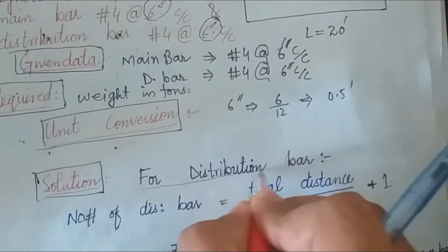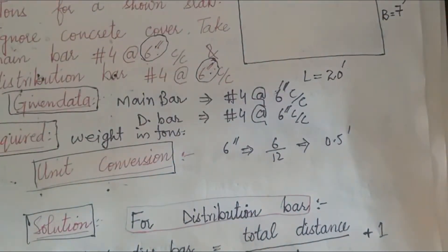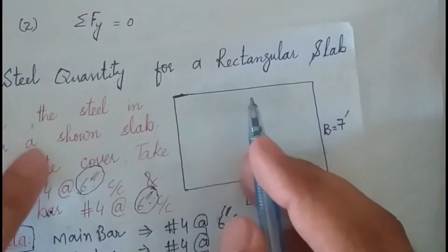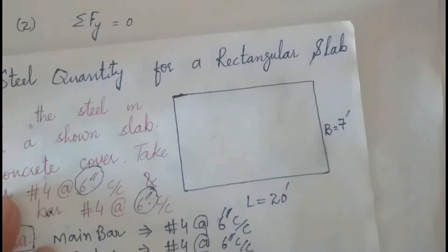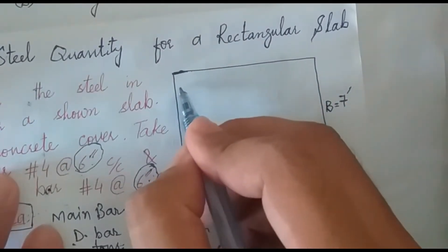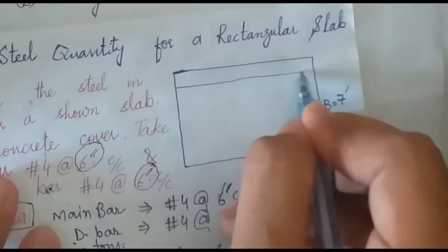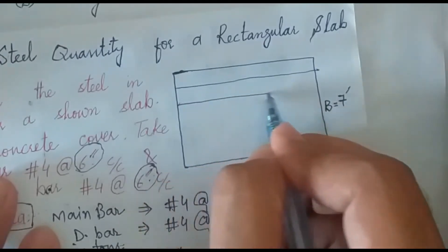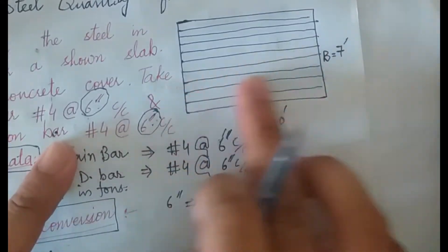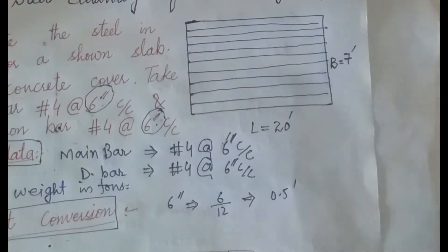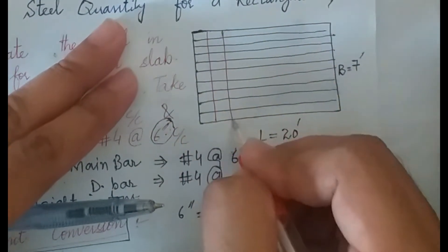We start with the distribution bar. An important point is in which direction we place the distribution bar and in which direction we place the main bar. The distribution bar will always be placed in the longer direction, and the main bar will always be placed in the shorter direction.